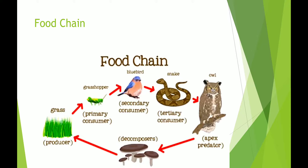When the owl dies, its body is acted upon by decomposers. They help in decomposing the dead remains of these animals and make the soil fertile. These decomposers feed on dead plants and animals, decay the dead matter, and release minerals into the environment, which are absorbed by the plants. So decomposers help in increasing the fertility of the soil.